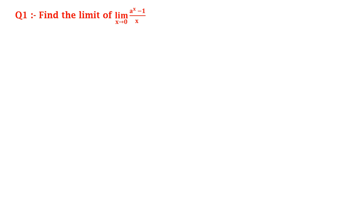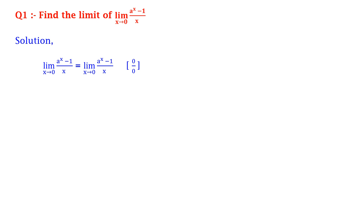First, find the limit: limit x tends to 0 of (a raised to x minus 1) upon x. Here, limit x tends to 0 of (a^x - 1)/x is equal to 0 upon 0, an indeterminate form.